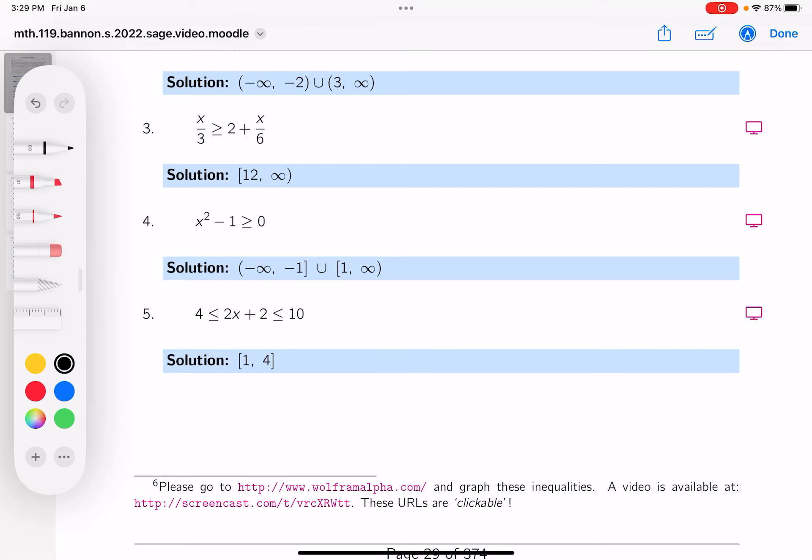Okay, number three is actually a linear inequality. It may look rational to you. Those denominators, three, they're not variable, so I'm going to multiply both sides by the LCD.